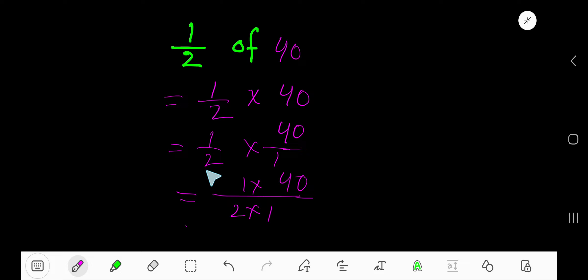Now multiply top number together and bottom number together. So 1 times 40 equals 40. 2 times 1 equals 2.